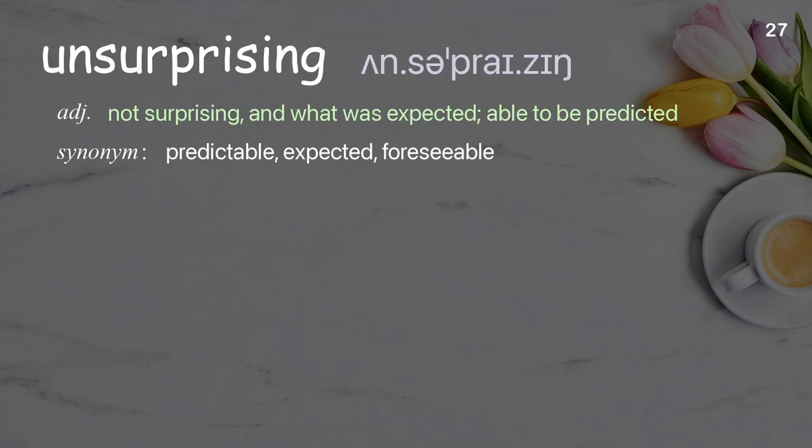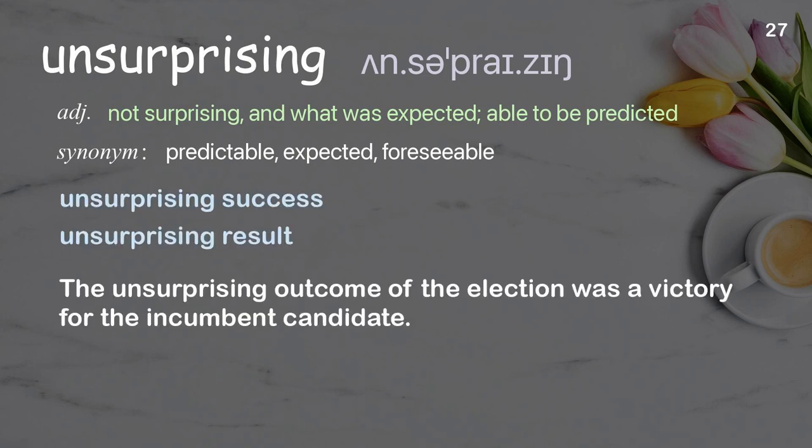Unsurprising: not surprising, and what was expected; able to be predicted. Examples: unsurprising success, unsurprising result. The unsurprising outcome of the election was a victory for the incumbent candidate.